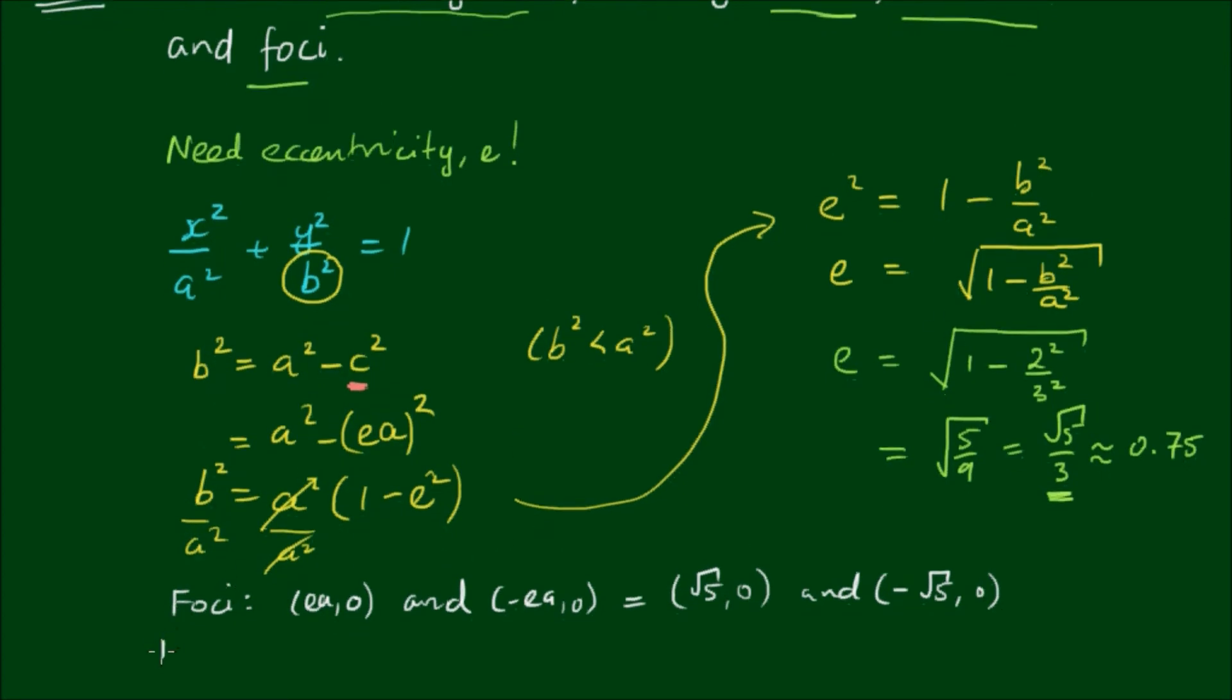And for the directrices, these have the equations x equals a/e and x equals -a/e. So therefore we have directrices at x equals 9/√5 and x equals -9/√5. So √5 is approximately equal to 2.24, and 9 over √5 is approximately equal to 4.0.